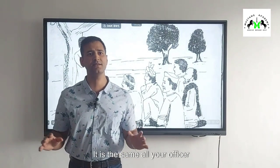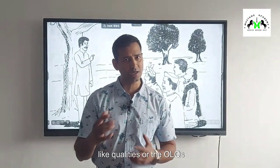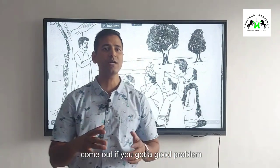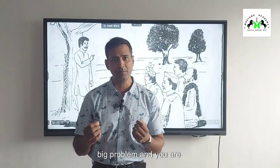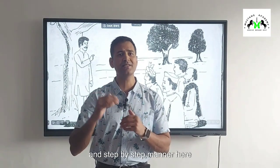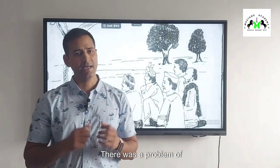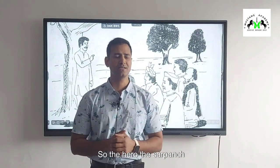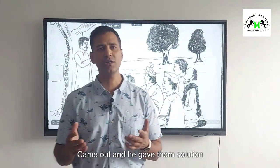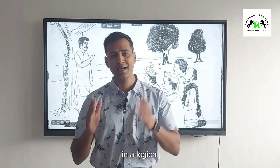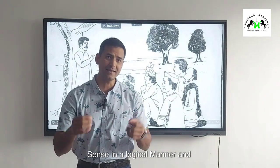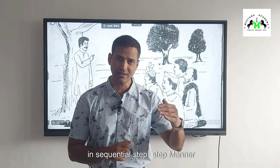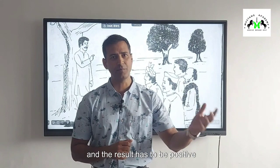Hercules was defined by the great tasks — the nine labors — that he did. So every hero is defined by the heroics that he does, and your story is no different. All your officer-like qualities, or OLQs, or the leadership qualities — factor one, factor two, factor three, factor four — will come out if you have a good, big problem and you are able to solve it in a sequential and step-by-step manner. In this story, the problem of less crop produce was solved by the sarpanch who gave sequential solutions in a logical manner, and the result was positive.